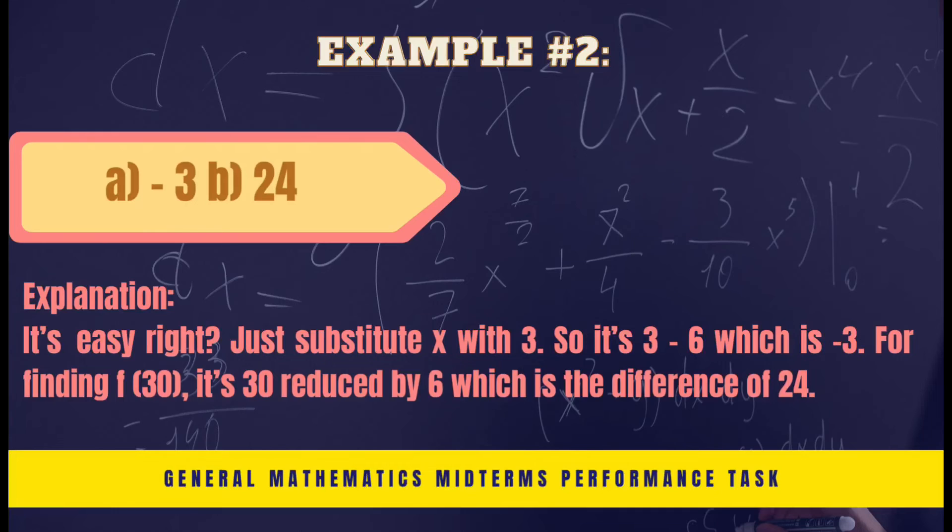For finding f(30), it's 30 reduced by 6, which the difference is 24. It's easy, right?